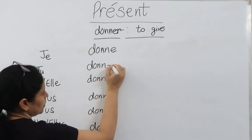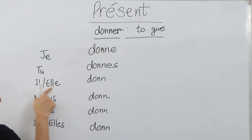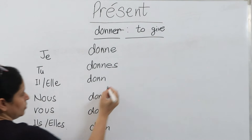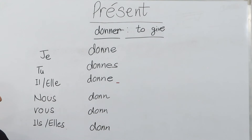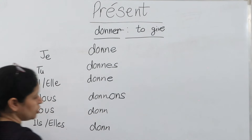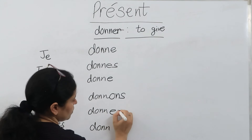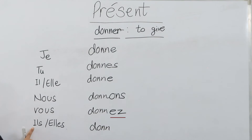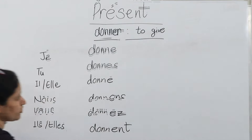For 'tu,' the ending is -es. For 'il' and 'elle,' it is -e. For 'nous,' it is -ons. For 'vous,' it is -ez. For 'ils' and 'elles' plural, it is -ent.